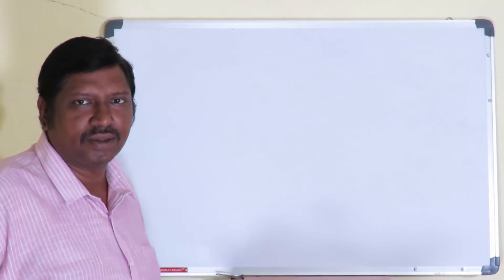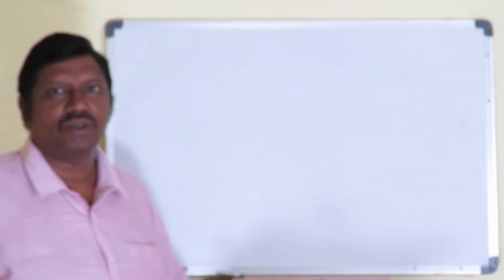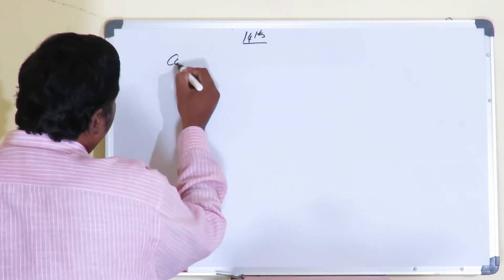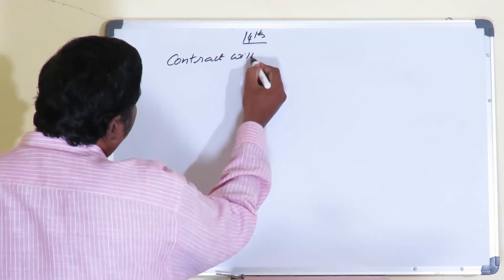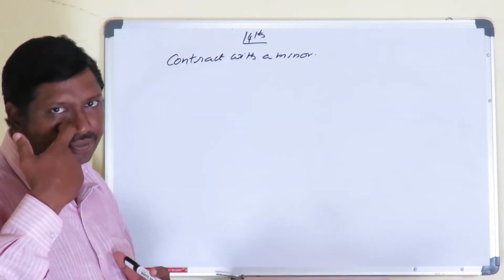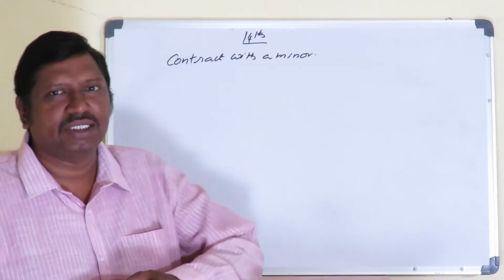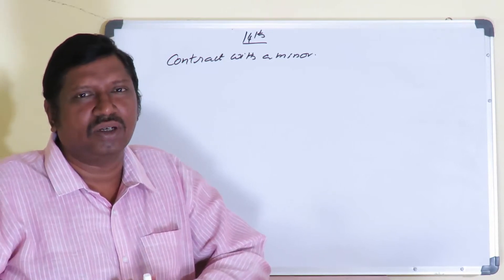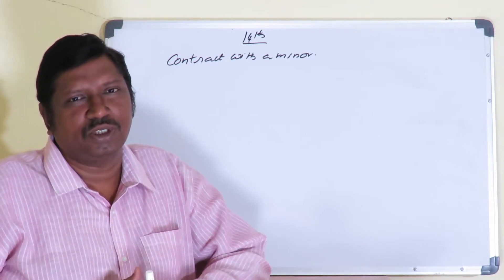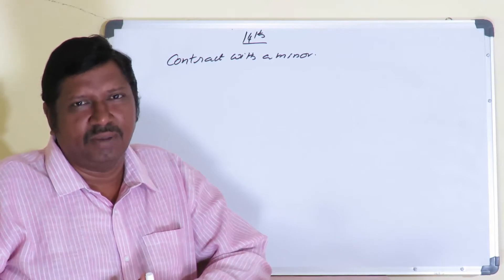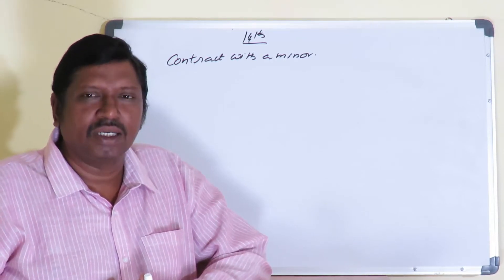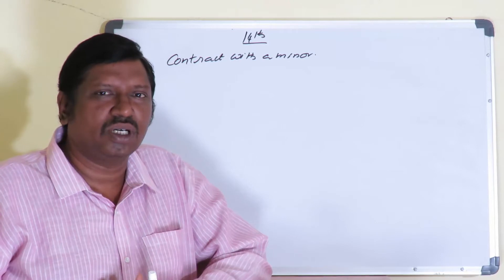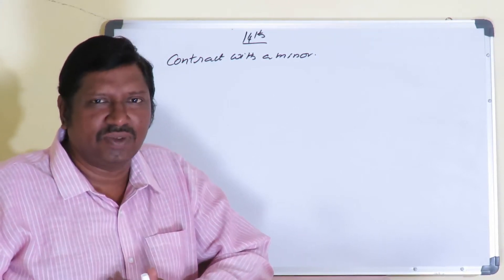Okay, dear students, welcome to the 15th lesson. In the 14th lesson, what we discussed was contract with a minor — whether ratification is possible with a minor's contract, whether restitution or restoration is possible, and what if a minor willingly misrepresents his age and enters into a contract. All these things we have already discussed.